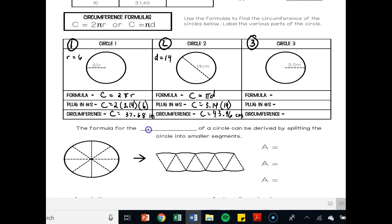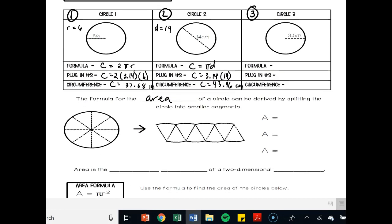The formula for the area of a circle can be derived by splitting the circle into smaller segments. Where we have this dotted line, all of these are radii of the circle. So you have the radii of the circle. You'll know each one of these is equal to half the circumference. All of these together are equal to half the circumference. Okay? So from here all the way to here.